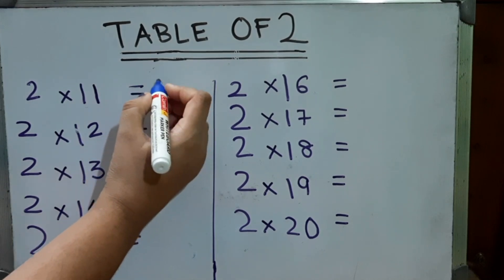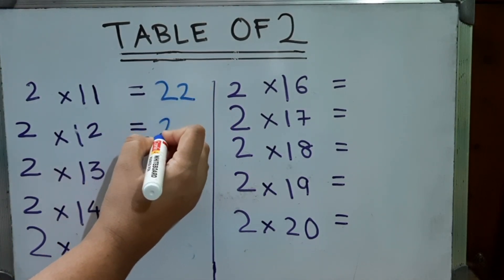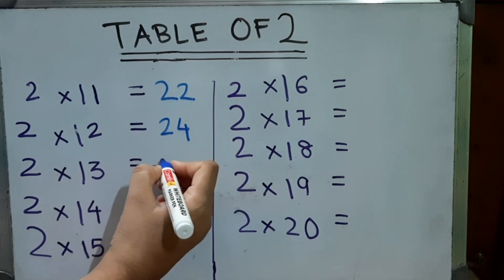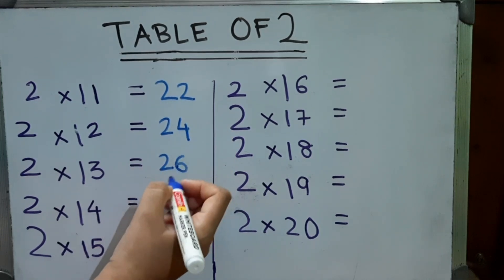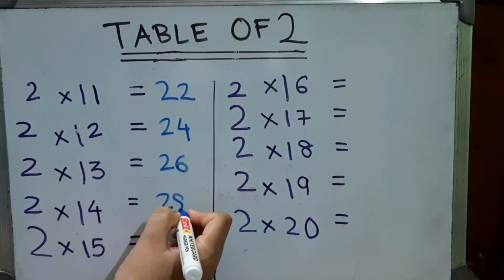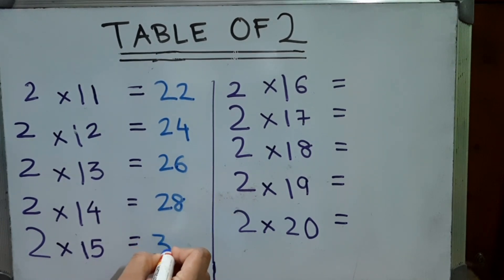2 into 11, 22. 2 into 12, 24. 2 into 13, 26. 2 into 14, 28. 2 into 15, 30.